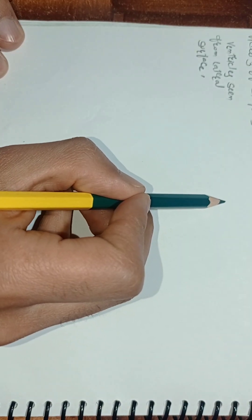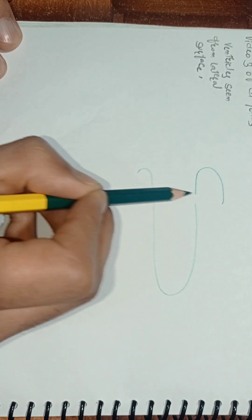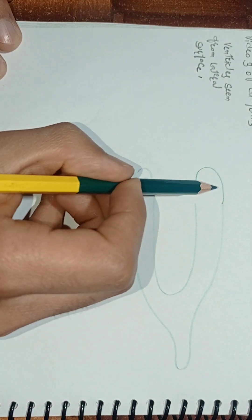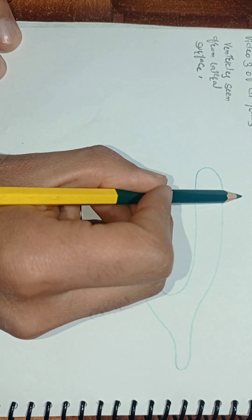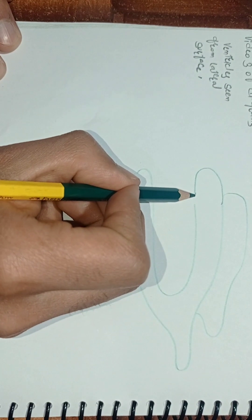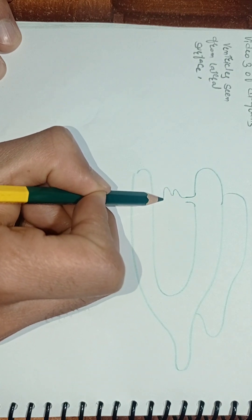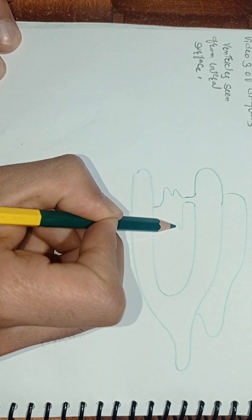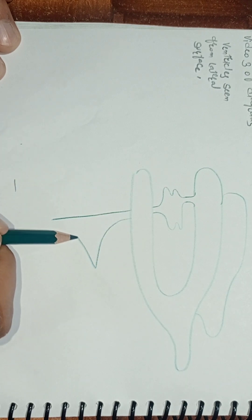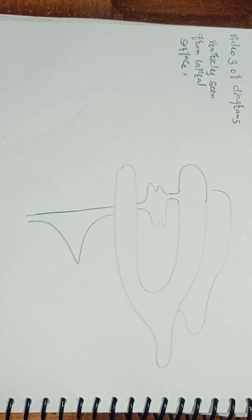First, we will draw a C-shaped structure like this, and we will extend it and continue it like this. This canal will extend downwards and continue like this. So this is the ventricular system seen from the lateral surface.